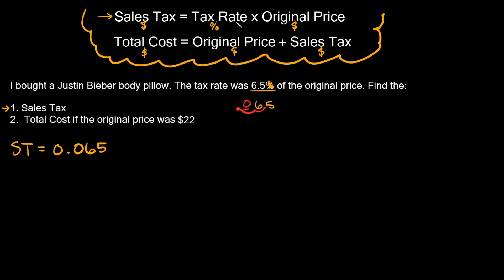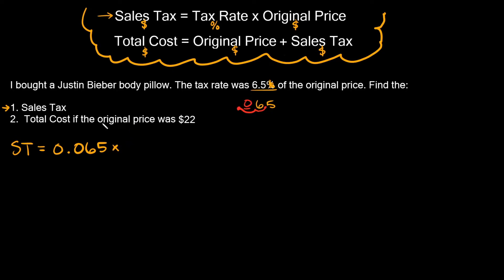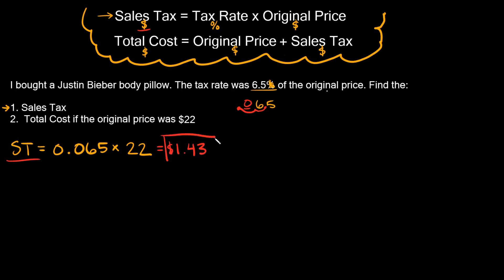So our tax rate is 0.065, and we multiply that by the original price. What is the original price? The problem says it was $22. So we plug in 0.065 times 22 into the calculator and get 1.43. The sales tax is equal to $1.43 — one dollar and forty-three cents.